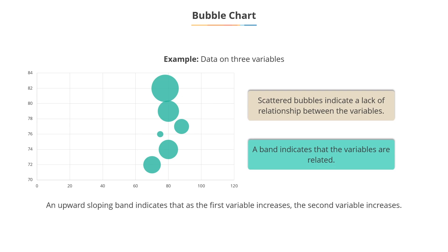For example, an upward sloping band indicates that as the first variable increases, the second variable increases.